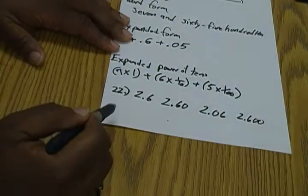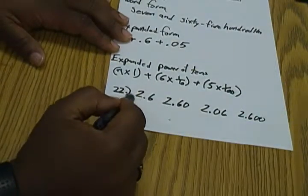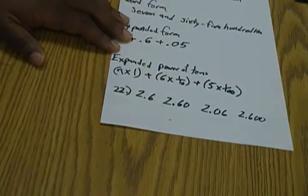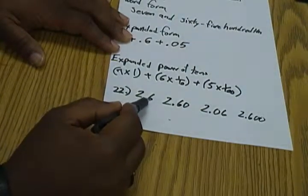Now to see if they're equivalent or not, you're going to look and see if they have a 2 and a 6 and those are in the same places. Now if we look here, our 2 is in the ones place, our 6 is in the tenths place.